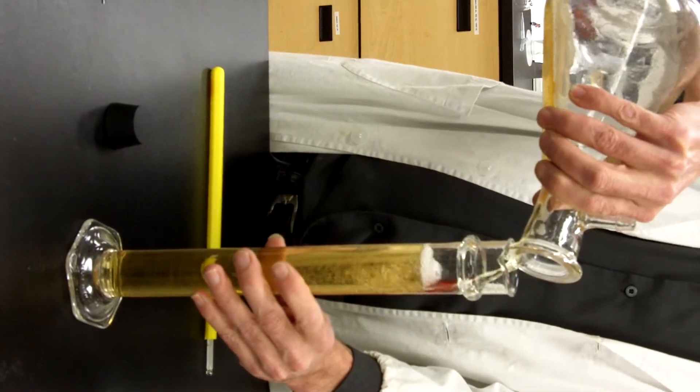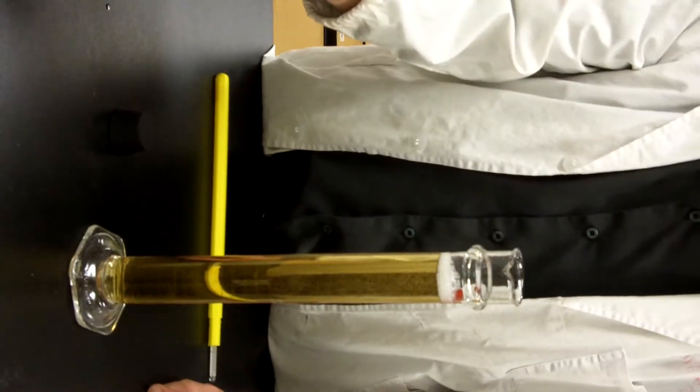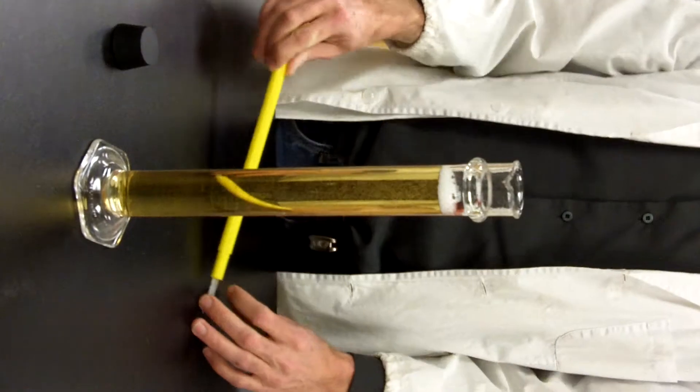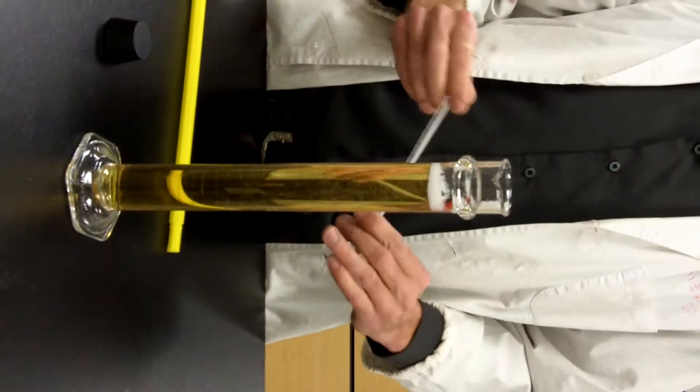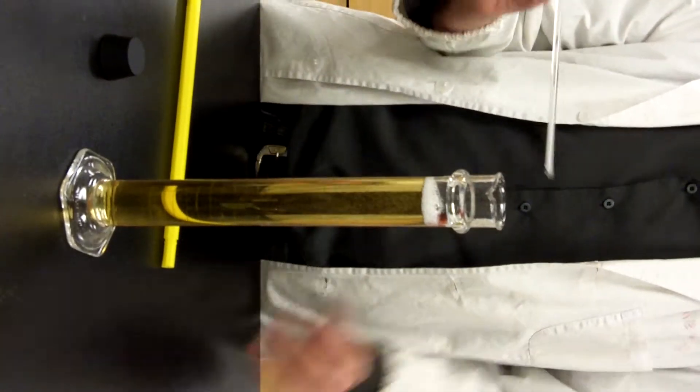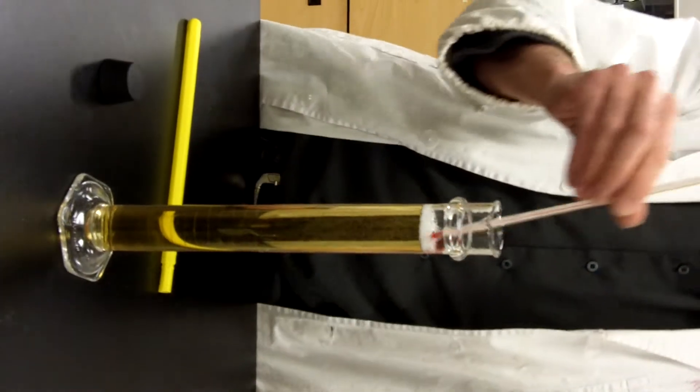And we do exactly the same for the wort. We don't degas the wort because it's got no carbon dioxide in. Now because we have to correct the specific gravity for temperature, we have to take the temperature of the beer first.